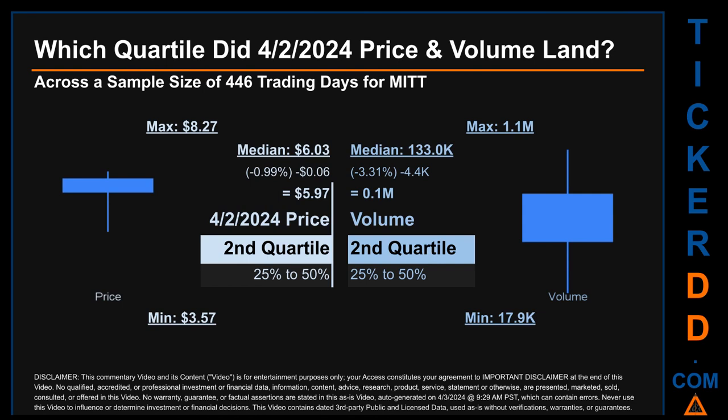Hello, my name is Maria. Which quartile did the 2nd of April 2024 price and volume land across a sample size of 446 trading days? The maximum end-of-day price for MITT was $8.27 while the minimum was $3.57. Within that price range, the 2nd of April 2024 price of $5.97 landed within the second quartile, putting it within the 25 to 50 percent range of all sampled end-of-day prices.